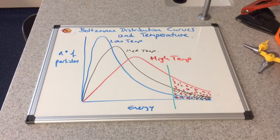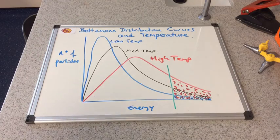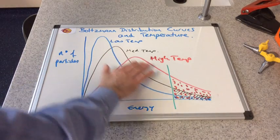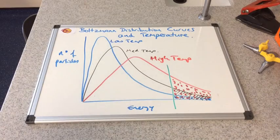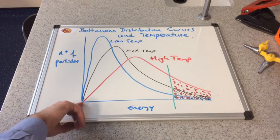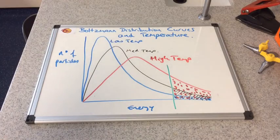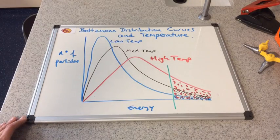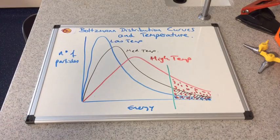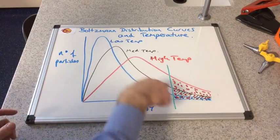And for the exam, you may have to draw a curve at one temperature, so they're going to be checking your accuracy. Have you started at the origin? Have you made it asymptote? And the other thing they'll be looking for is if you change the temperature, have you got the proportions right?